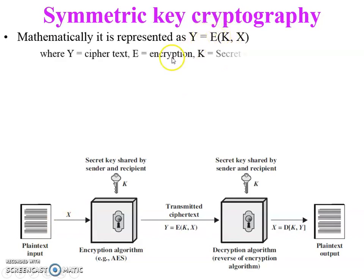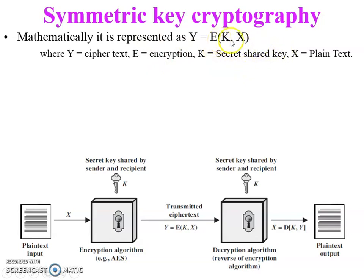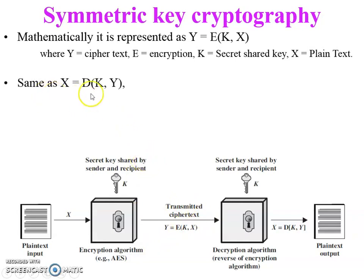The same key is used for both encryption and decryption, which is why it is called a symmetric cipher. In the figure, key K is used in the encryption algorithm and the same key K is used in the decryption algorithm. The key is the most important element; if the key is lost, the message can be decrypted.